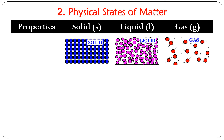We can also classify matter based on its physical state. The three most common physical states are solid, liquid, and gas. Solids are represented by a small 's', liquids by a small 'l', and gases by a small 'g'. In a solid substance, particles are very organized and densely packed. In a liquid, there are still many particles but they are less organized. In a gas, there are relatively few particles and they are not organized at all.